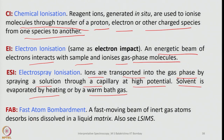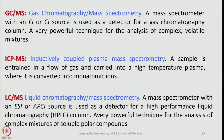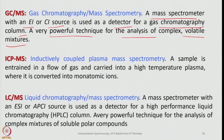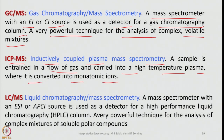FAB — fast atom bombardment: a fast-moving beam of inert gas atoms strikes ions dissolved in a liquid matrix, desorbing them. GC-MS — gas chromatography mass spectrometry: a mass spectrometer with an EI or CI source is used as a detector for a gas chromatography column — a very powerful technique for the analysis of complex volatile mixtures, separating and identifying compounds by giving the proper molecular ion value. ICP-MS — inductively coupled plasma mass spectrometry: a sample is entrained in a flow of gas and carried into a high-temperature plasma where it is converted into monatomic ions.